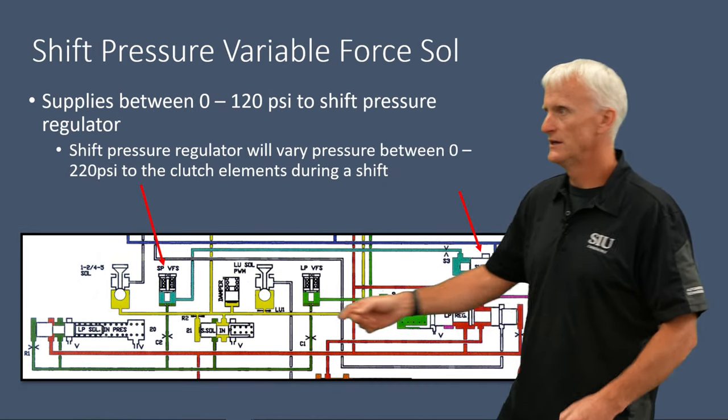Here's a technician getting ready to check some solenoids — cracking his knuckles, checking his meter leads together showing about a tenth of an ohm to account for. First, checking the lockup solenoid: two and a half ohms, right on the money. Next, the shift pressure solenoid: five ohms, perfect. And one of the shift solenoids: four ohms, textbook. Those are exactly what they're supposed to be.